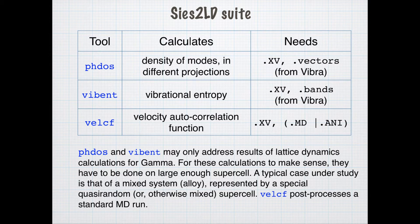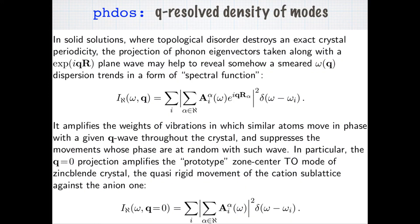The second tool is VibEnt, which performs the calculation of the contribution to vibration entropy from the given phonon spectrum. Finally, the tool VelocityPhi permits calculation of the velocity autocorrelation function and makes its Fourier transform. We start with the discussion of PHDOS.